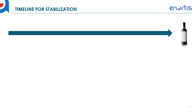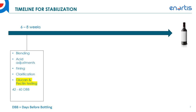Here's an ideal timeline for stabilization of red wines. Typically you would be doing all major adjustments to the red wine about six to eight weeks from your bottling date — this includes blending, acid adjustments, fining, and clarification. During this time we recommend doing glucan and pectin testing. Glucans and pectins are polysaccharides naturally found in grapes; glucans can be elevated in grapes that have had botrytis infection, and they can create filterability issues at bottling. Doing glucan and pectin testing early gives you the opportunity to apply enzymes to remove them. Most commercial labs can offer this testing, or you can visit our website for methodologies to do it yourself.